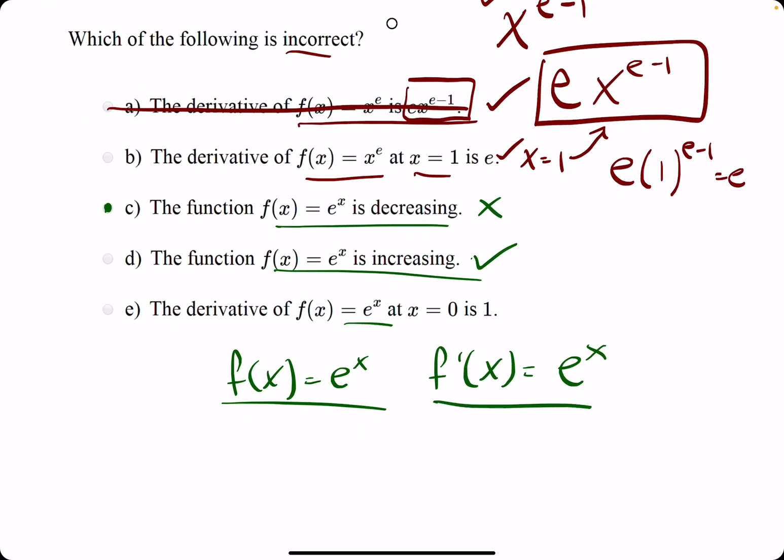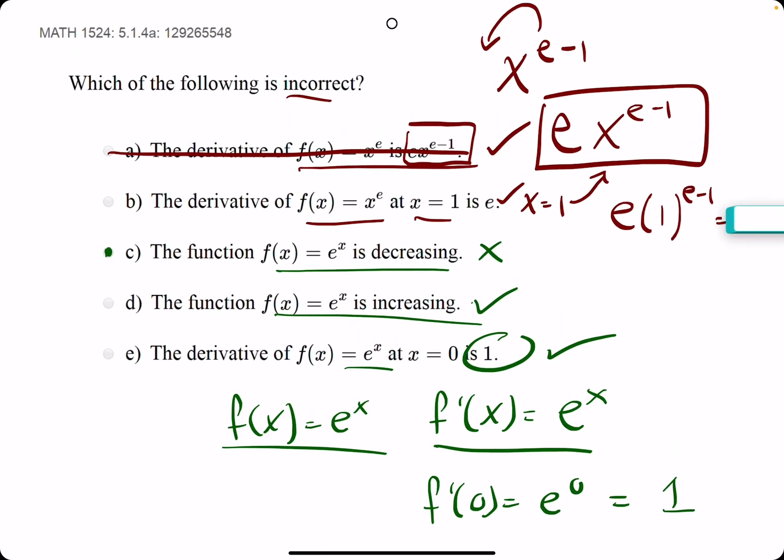So the derivative, f prime at x equals zero, f prime of zero is e to the zero. But anything to the zero is one. So for them to say the derivative is one, checks out. So we break out the eraser and we see c is our answer.